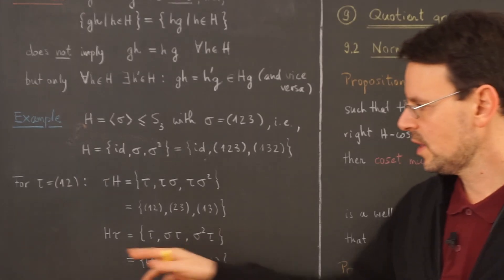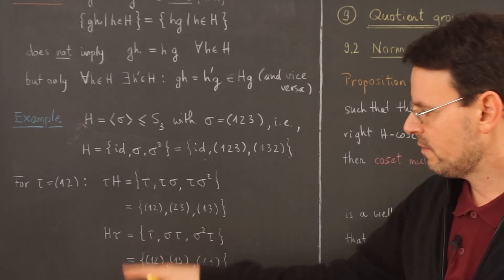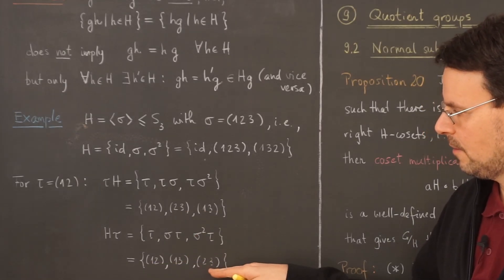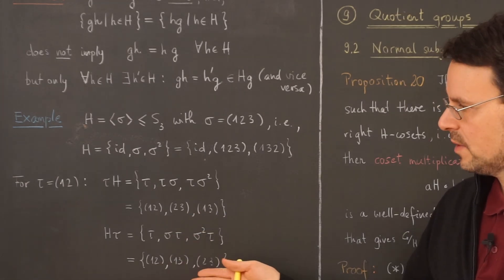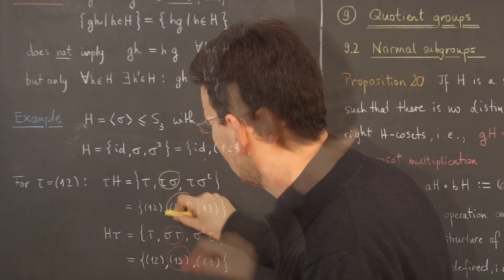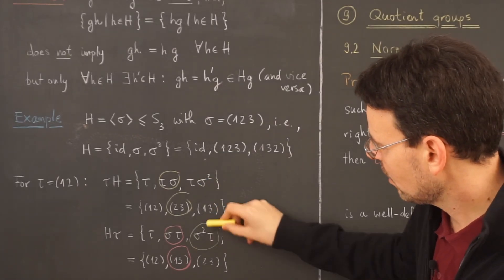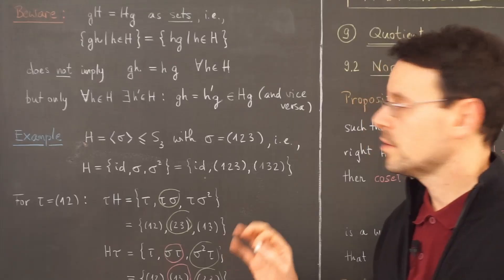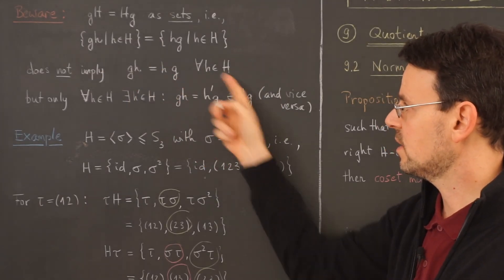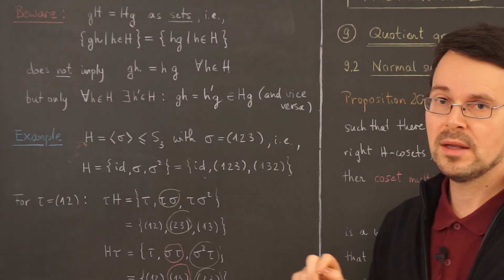For the right coset H·tau, I get tau, sigma·tau, and sigma²·tau. Computing these: tau itself, then (1,3), and these two sets are the same — they contain the same three elements. But for example, tau·sigma is not the same as sigma·tau — these are clearly different — yet the sets are equal. So beware: the equality of left and right cosets does not imply element-wise equality; when you change the order, you may end up with a different element of the subgroup H.